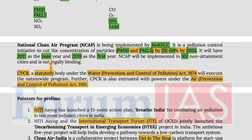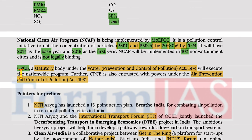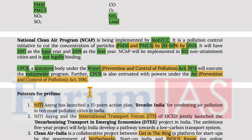NCAP targets have since changed and it is not legally binding. The Central Pollution Control Board (CPCB) is a statutory body under the Water Prevention and Control of Pollution Act of 1974, and executes the program nationwide. CPCB is also entrusted with powers under the Air Prevention and Control of Pollution Act of 1981.